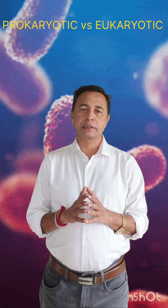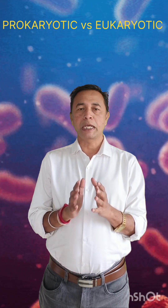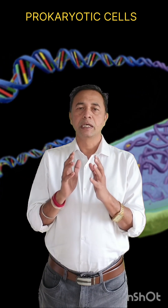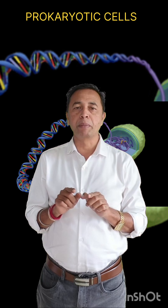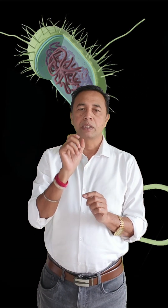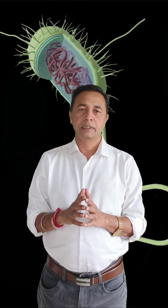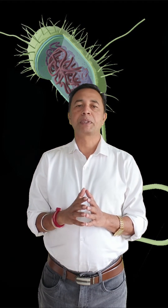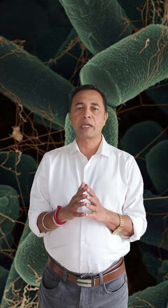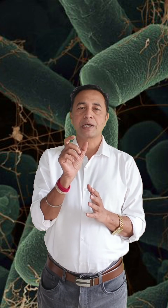Prokaryotic cells and eukaryotic cells are two types of fundamental cells differing in their complexity. Prokaryotic cells are single, smaller, without a true nucleus — that is, a nucleus without a nuclear membrane. They also don't have membrane-bound organelles, and the DNA is present in the cytoplasm. Examples of prokaryotic cells are Bacteria and Archaea.